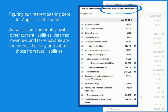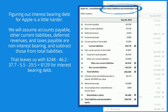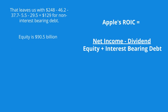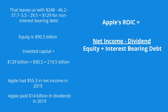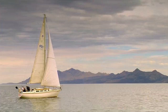Figuring out interest-bearing debt for Apple is a little harder. We assume accounts payable, other current liabilities, deferred revenues, and taxes payable are all non-interest-bearing and subtract those from total liabilities, leaving $129 billion in interest-bearing debt. Apple's equity is $90.5 billion, giving total invested capital of $219.5 billion. Apple had $55.3 billion in net income and paid $14 billion in dividends, so Apple's ROIC is 18.8%.